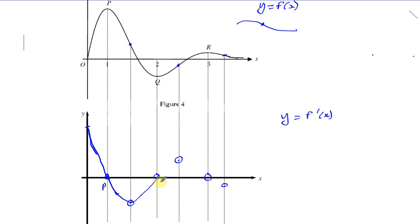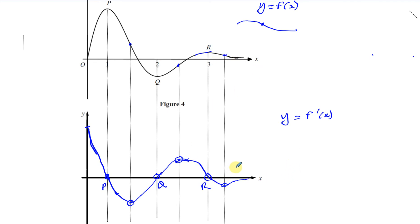It hits zero again at Q. After Q, the gradient becomes positive, so it goes above the x-axis. It rises until it reaches its maximum value — not zero, since a tangent there won't be horizontal, but that's the maximum it reaches in this area. Then the gradient starts to get less and less, still positive, until it becomes zero at R. After R it's negative, falls, reaches a minimum, then starts to move towards zero — like an asymptote. That's how you draw the gradient function.